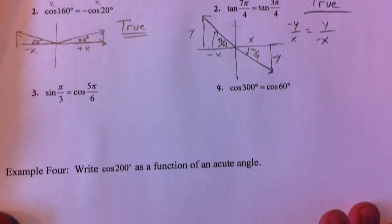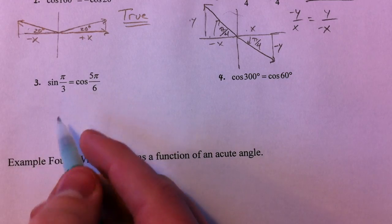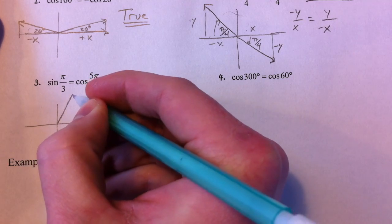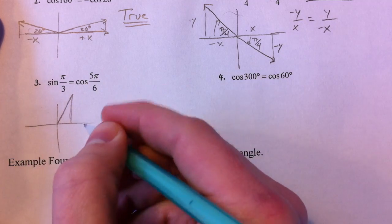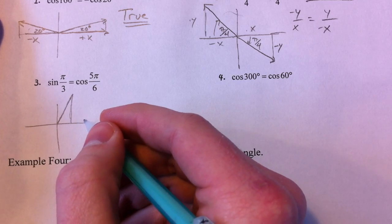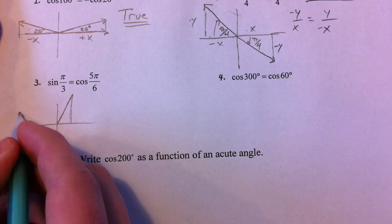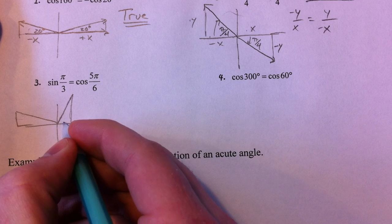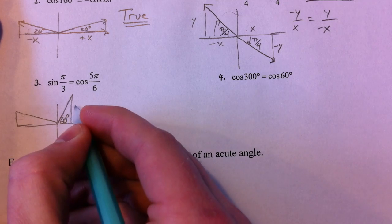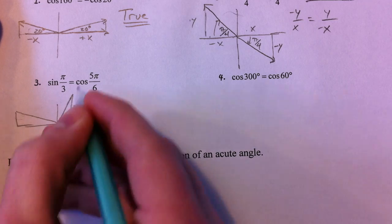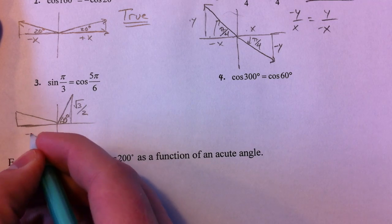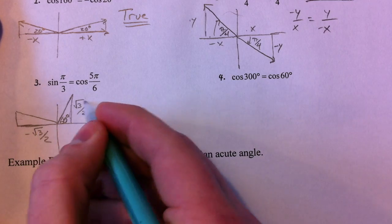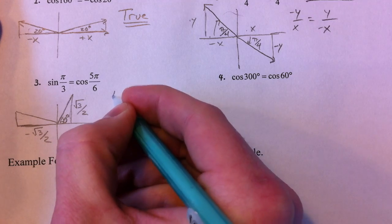Sine of π/3 — π/3 is that 60-degree angle. Is that the same as cosine of 5π/6? Notice that for the 60-degree angle, the sine is the y value, so that's √3/2. The cosine is the x value, and that's negative √3/2. Where sine of π/3 is positive, cosine of 5π/6 is negative. So that is false — very, very close, but one's positive and one's negative.